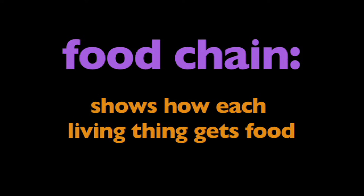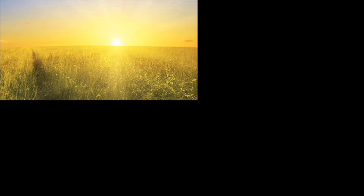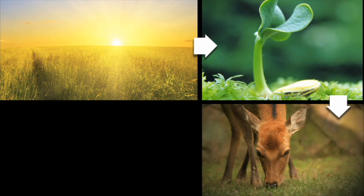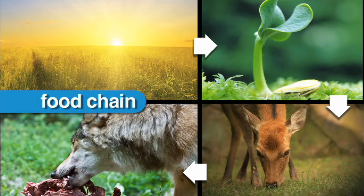In this program, we're going to learn about the food chain. What is a food chain? A food chain shows how each living thing gets food. To better understand how living things get energy, we use a food chain. A food chain shows the relationship between the plants and animals in an ecosystem.